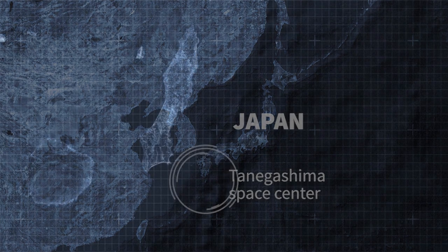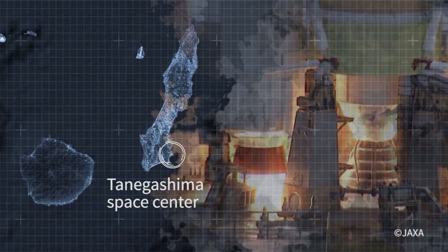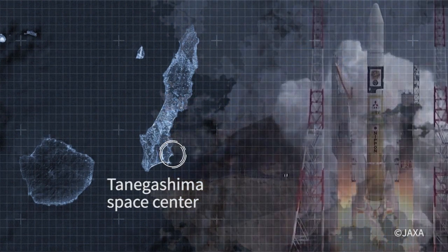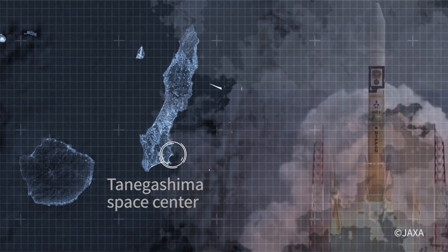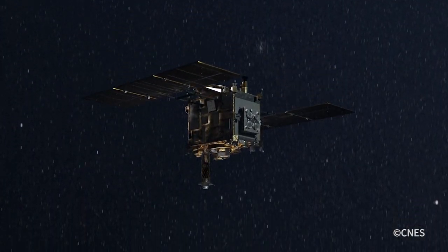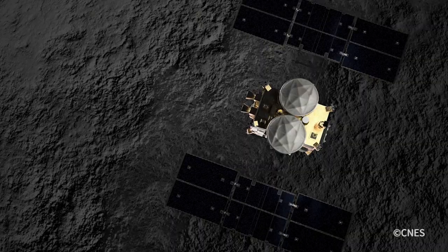More than four years after its launch at the Tanegashima Space Center in Japan, the space probe Hayabusa-2 is ready for its main mission: to collect a soil sample from the asteroid Ryugu.